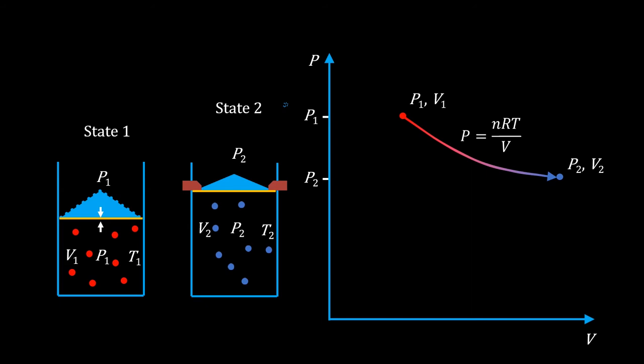This process has a special name: quasi-static process. In future, we may use the word reversible process, which actually means quasi-static process, because that's the only practical means of doing a reversible process. The path can be represented with full confidence in the PV diagram, unlike the irreversible case.